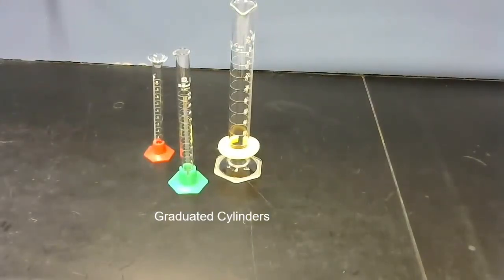These are graduated cylinders. Their precision depends on the markings on the cylinder. You're always going to record one decimal place past where the markings are. For example, if it were marked to the tenths place, you would estimate the hundredths place. If it were the ones place, you would estimate the tenths place.